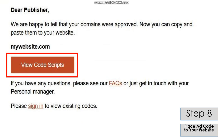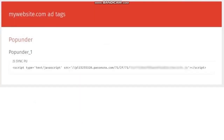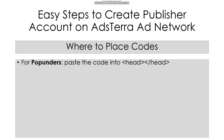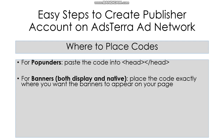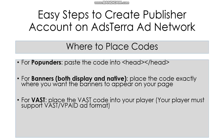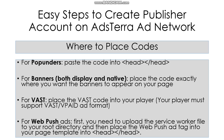Once your website is approved, you will get a mail which looks like this. When you tap the View Code Snippet button in the mail, you will find the generated code and now you can add it to your website and start making profits. For pop-unders, place the code in the head section. For banners, place the code exactly where you want the banners to appear on your page. For VAST, place the VAST code into your player — your player must support VAST or VPAID format. For web push ads, first upload the service worker file to your root directory, and then place the web push ad tag into your page template.